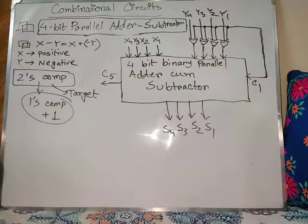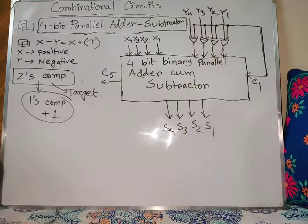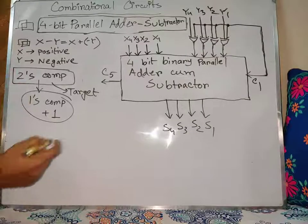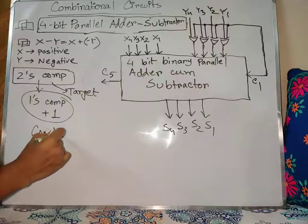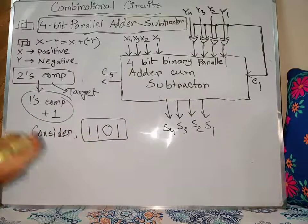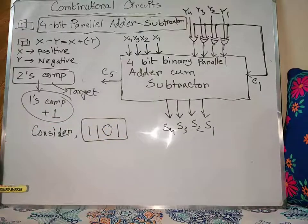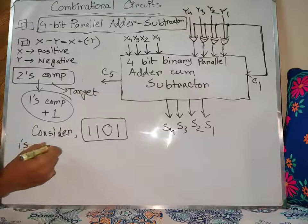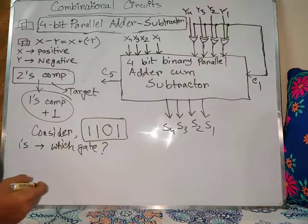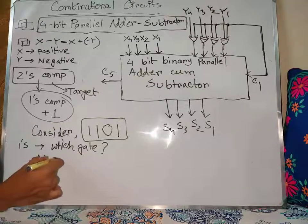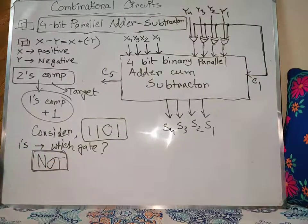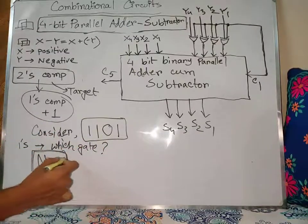The first step is the 1's complement. We are going to find the 1's complement of the number. Suppose we consider the number 1-1-0-1. We must make the 1's complement of this number. The answer is that we use a NOT gate. So we call this number 1-1-0-1, and its 1's complement is 0-0-1-0.